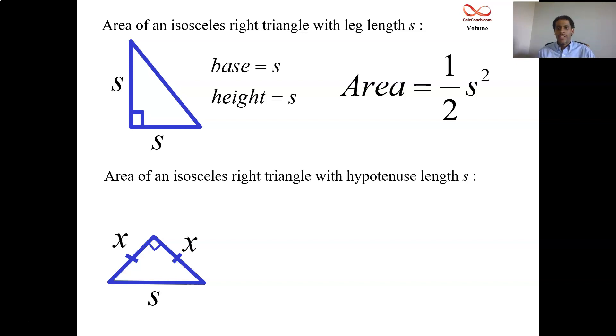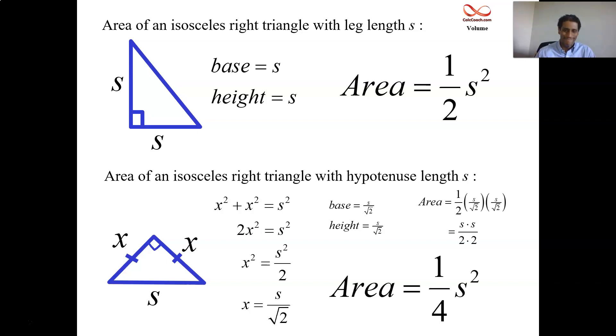We don't know these legs. Let's generically call them x and use Pythagorean theorem. The fact that x squared plus x squared is s squared. So two x squared equals s squared. And therefore, we have that x squared is s squared over 2. So we're good. The base is x and the height is x. And so we have s squared over 2, s over root 2 once we take the square root. So we have basically one half of x squared again. S over root 2 and s over root 2 is just s squared over 4.